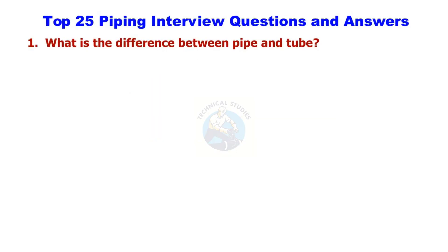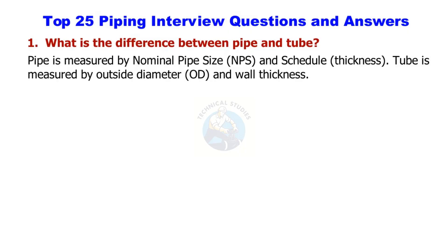What is the difference between pipe and tube? Pipe is measured by nominal pipe size (NPS) and schedule thickness. Tube is measured by outside diameter (OD) and wall thickness.